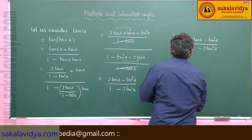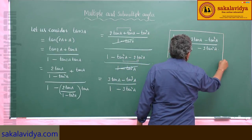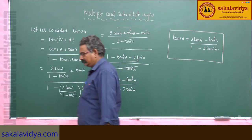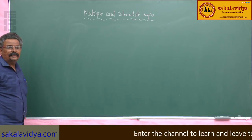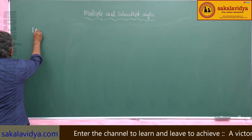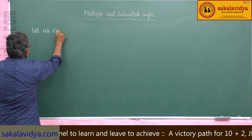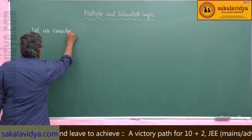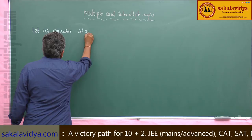So this is the formula: tan(3a) = (3tan(a) - tan³(a)) / (1 - 3tan²(a)). Now let us find out the value of cot(3a). Let us consider cot(3a).